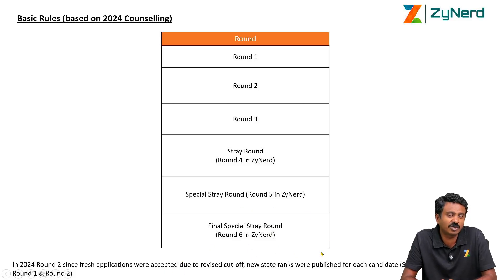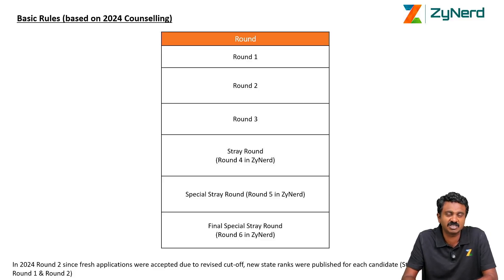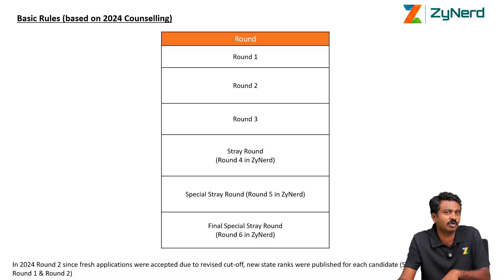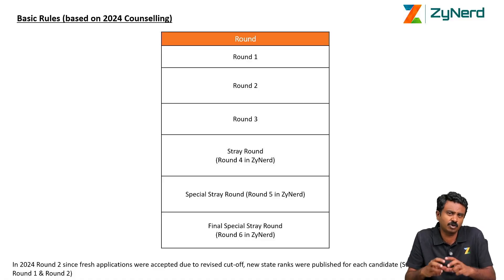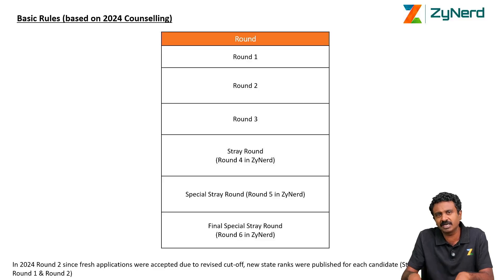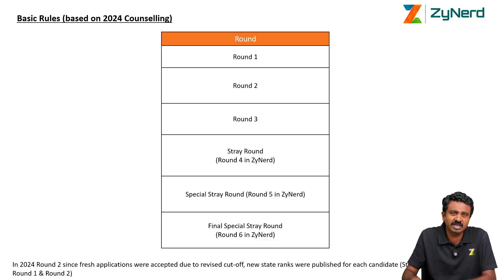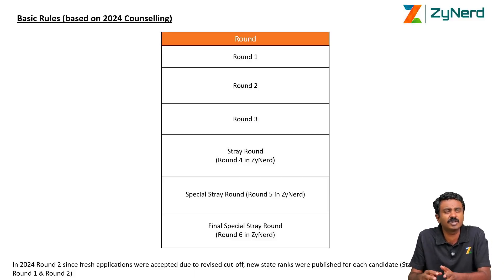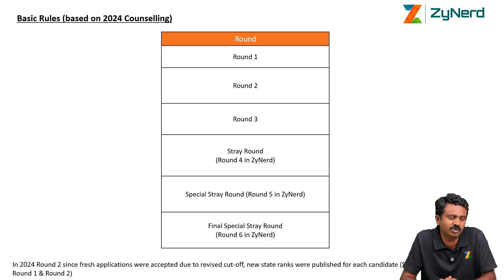In 2024, Round 2 was a little earlier and fresh applications were accepted a little later due to a revised cutoff, so the ranks might have changed slightly. In Round 1, somebody with state rank 300 might have moved to 300 or 305. Don't focus on that — look at an overall range. Whether it is the same candidate doesn't matter. Some seat closes at 300, 305, or 310 — around 300. If you have 10 such seats, you will get at least a few of them — that is what you need to look at and decide based on.